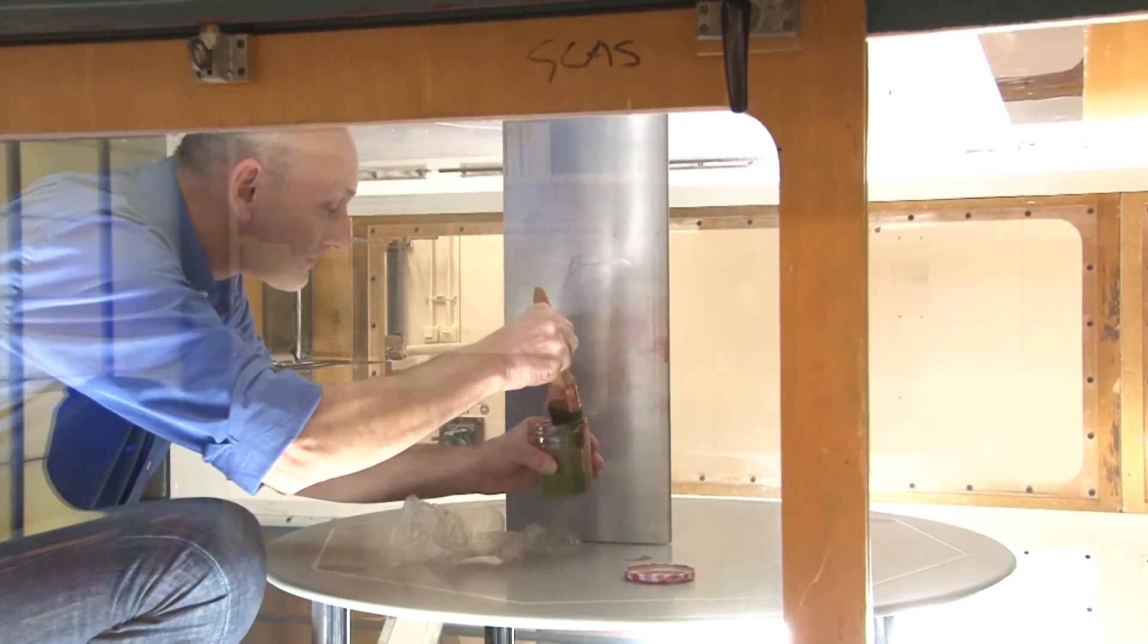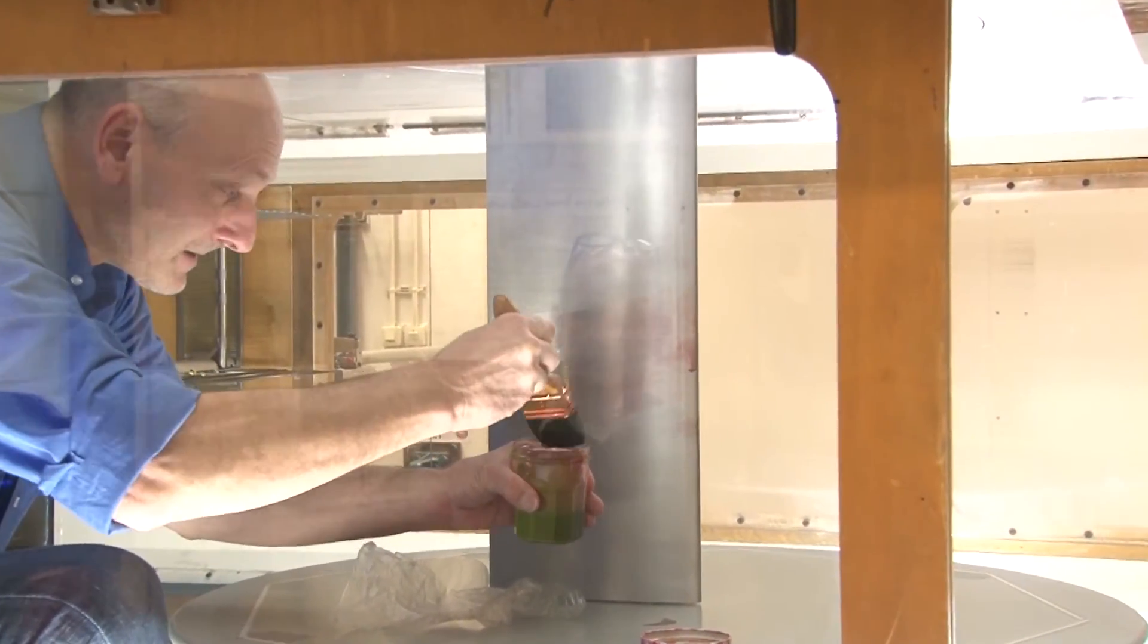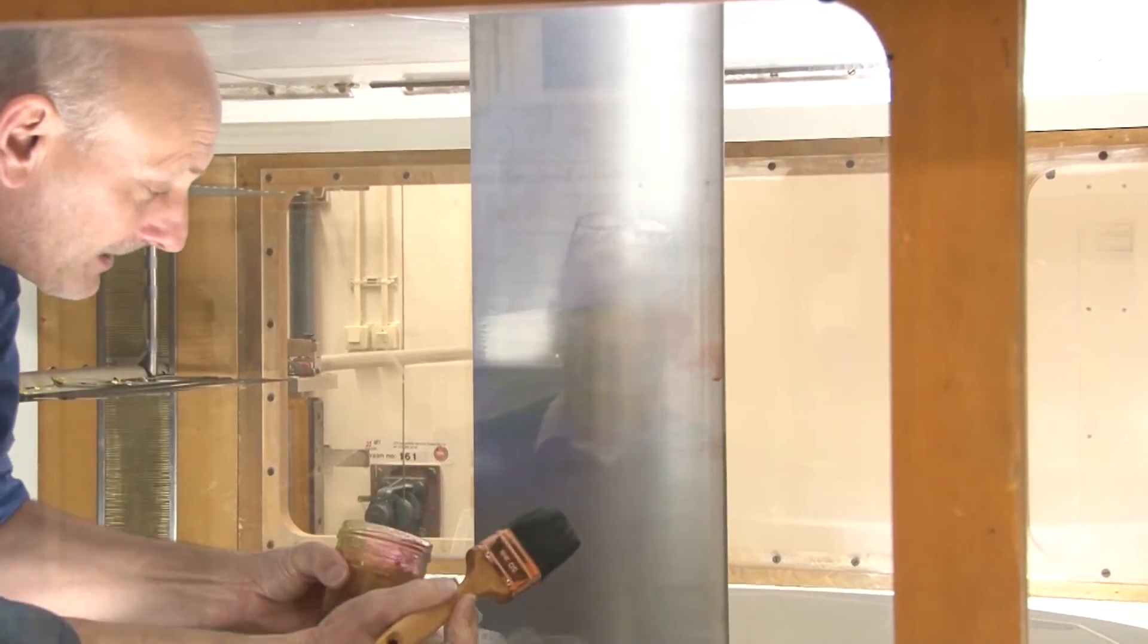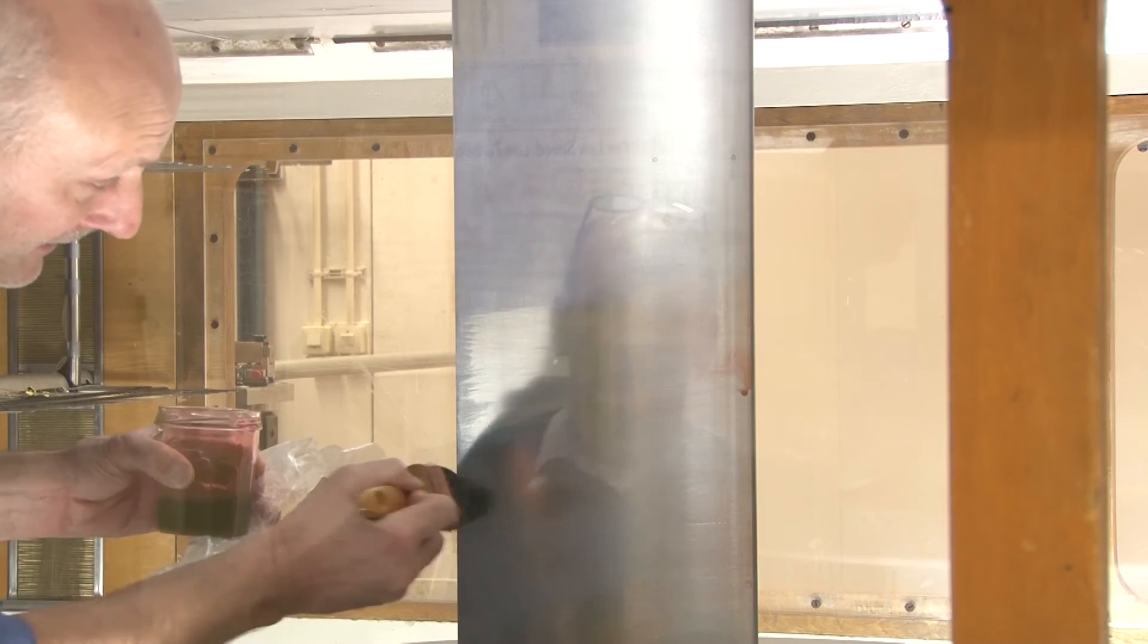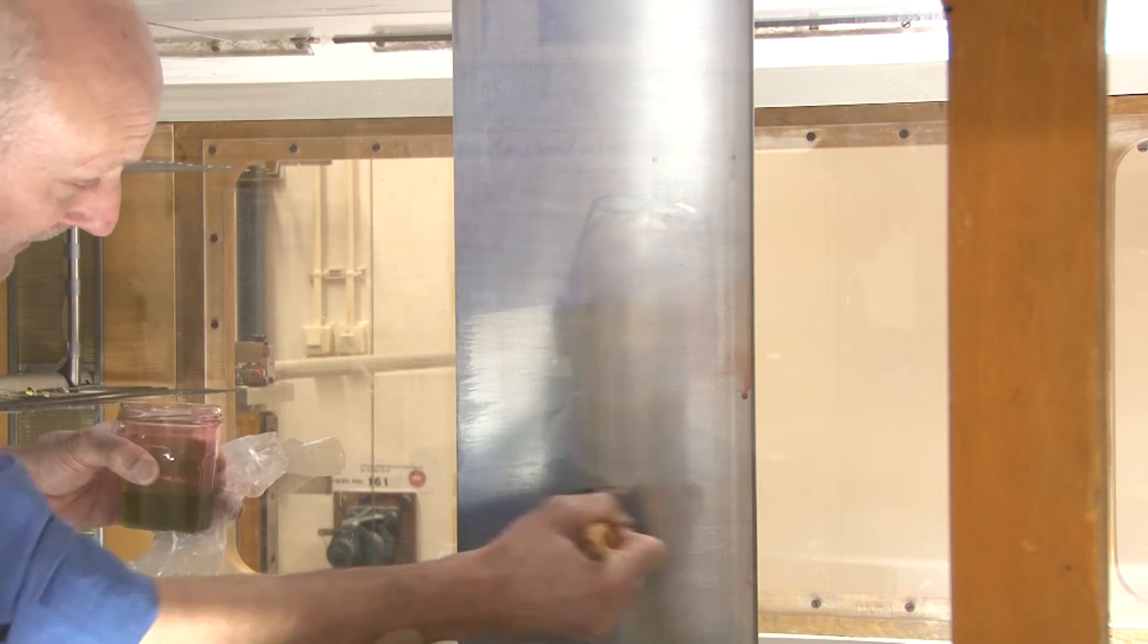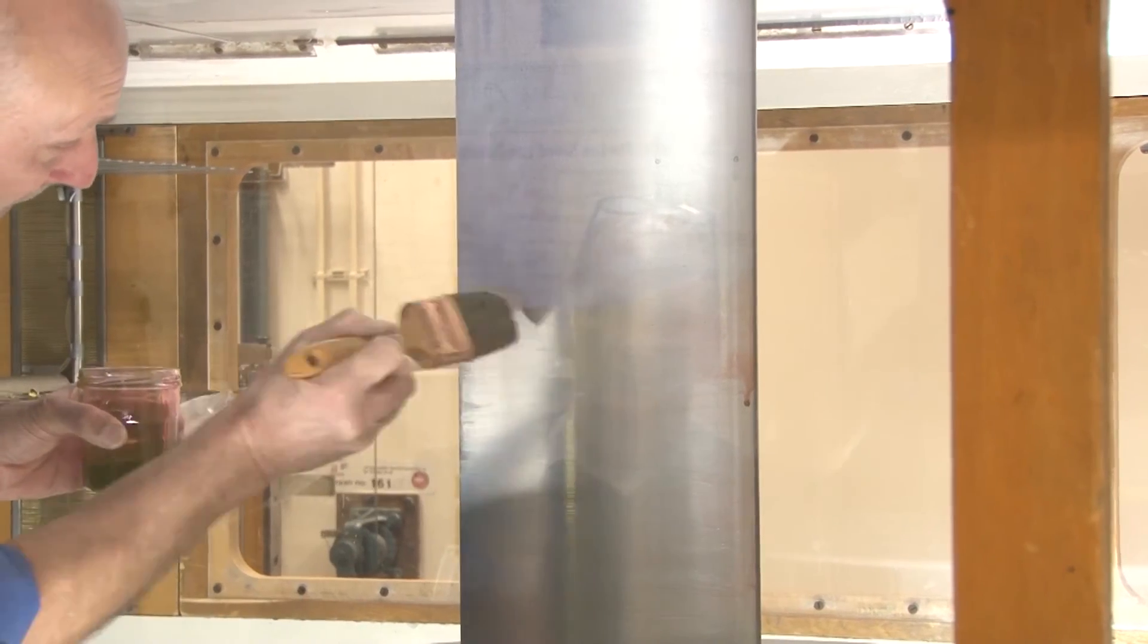As I explained in one of the lectures, a nice way of learning something about the flow over the airfoil is the fluorescent oil technique. The model is painted with oil, to which a fluorescent dye has been added. And if we look at it with a UV lamp, we will see the effect of wall friction.